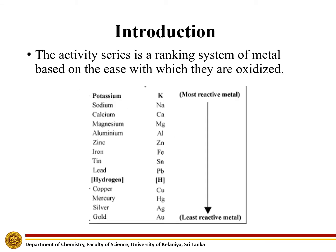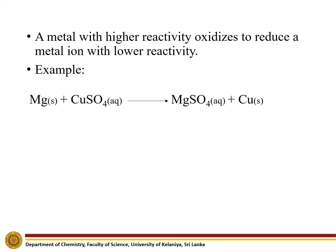The activity series is a ranking system of metals based on the ease with which they are oxidized. The activity series is set out from high reactivity metals to low reactivity metals. A metal with higher reactivity oxidizes to reduce a metal ion with lower reactivity.